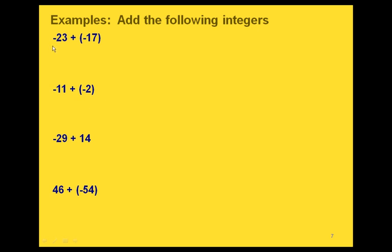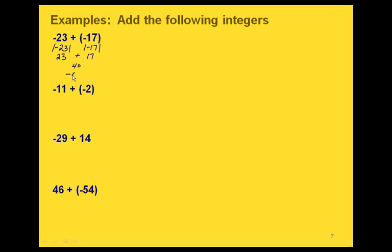Let's look at this first one with absolute values. One of the first things you always want to do with problems like this is notice whether the signs of the numbers are the same or different. In this one, we have two numbers with the same sign since they're both negative. That means we're going to find the absolute values and just add them together. So we have 23 and 17. If we add those together, we get 40. Then we take the sign that these two had in common, which was a negative. So our final answer is negative 40.